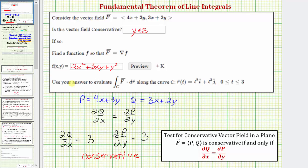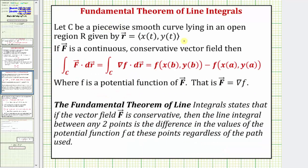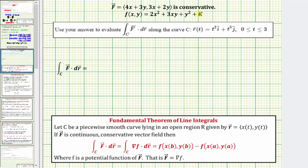Now we'll use the fundamental theorem of line integrals to evaluate this line integral. The fundamental theorem states that if C is a piecewise smooth curve lying in an open region R given by the vector function r of t, and the vector field F is continuous and conservative, then the line integral along the curve C of F dot differential r equals f of x of b comma y of b minus f of x of a comma y of a, where f is the potential function. So the line integral between any two points is a difference in the values of the potential function at those endpoints, regardless of the path used.